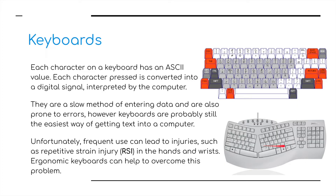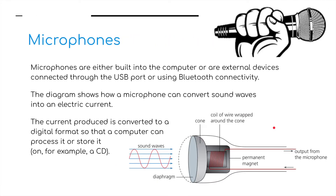Unfortunately, frequent use can lead to injuries such as Repetitive Strain Injury, or RSI, in the hands and wrists. Ergonomic keyboards can help overcome these problems — certainly if you're gaming on a PC you'll probably have something along those lines. Moving on to microphones: microphones are either built into a computer or are external devices connected through a USB port or using Bluetooth connectivity.